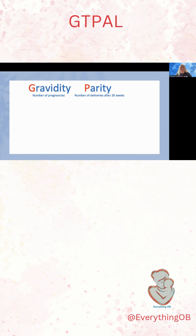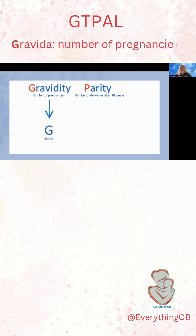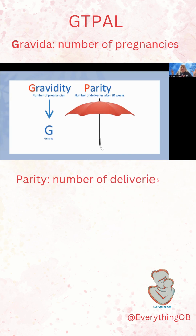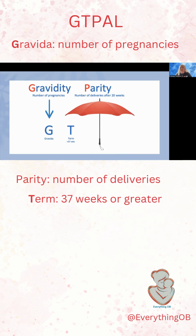The G stands for gravida — the number of pregnancies. This stays the same. The rest falls under the umbrella of parity. When we look at this umbrella of parity, we look at how many term deliveries she has had. Term deliveries are any deliveries that happened after 37 weeks gestation.